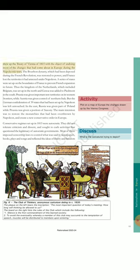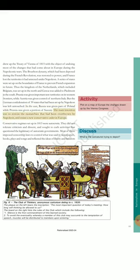The Treaty of Vienna of 1815 was the object of undoing most of the changes that had come about in Europe during the Napoleonic Wars. The Bourbon dynasty, which had been deposed during the French Revolution, was restored to power, and France lost the territories it had annexed under Napoleon. A series of states were set up on the boundaries of France to prevent French expansion in future. Thus the Kingdom of the Netherlands, which included Belgium, was set up in the north and Genoa was added to Piedmont in the south. Russia was given important new territories on its western frontiers, while Austria was given control of northern Italy. But the German confederation of 39 states that had been set up by Napoleon was left untouched. In the east, Russia was given part of Poland while Prussia was given a portion of Saxony. The main intention was to restore the monarchies that had been overthrown by Napoleon and create a new conservative order in Europe. Conservative regimes set up in 1815 were autocratic. They did not tolerate criticism and dissent, and sought to curb activities that questioned the legitimacy of autocratic governments. Most of them imposed censorship laws to control what was said in newspapers, books, plays and songs that reflected the ideas of liberty and freedom.